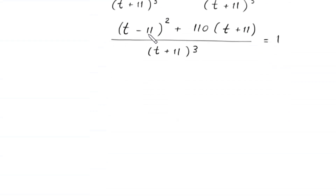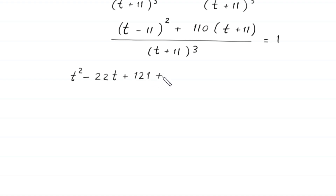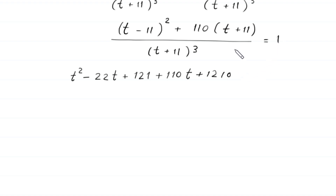Now we expand. This t minus 11 whole squared becomes t squared minus 22t plus 121, plus 110 times t, which gives 110t, and 110 times 11 gives plus 1210.